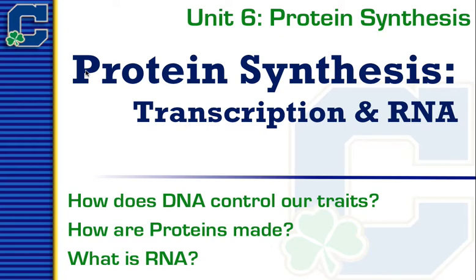Protein synthesis is how we make the proteins that cause us to do the things that we do, to look the way that we look, and everything about us. So today we're going to cover these three topics: how does DNA control our traits, how are proteins made in the cell, and what is RNA? We talked a little bit about protein synthesis when we talked about cells — where the protein was made and where it goes — but we didn't talk about the process of actually making it, which is what we're going to focus on for the next couple of weeks. But today we're specifically going to talk about transcription and RNA.